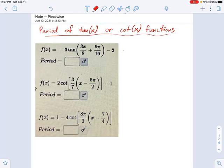There are a few things that change when you're talking about tangent and cotangent compared to what we're used to with sine and cosine. One of those things is how you calculate the period of the function.